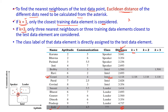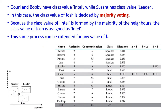If K equals 3, we consider the 3 nearest neighbors: Gowri, Bobby, and Sushant, with distances 1.500, 1.118, and 1.414 respectively. Bobby and Gowri are labelled Intel, while Sushant is labelled Leader. Using majority voting, since two of the three neighbors are Intel, we assign the class label Intel to Jos.